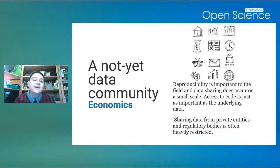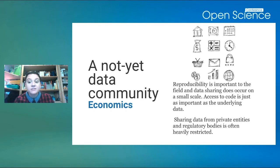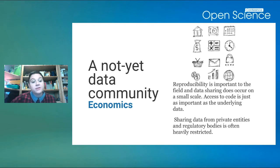Not every form of scholar or discipline can map nicely onto a data community. There are disciplines and sub-disciplines where it's quite challenging to share data — one example is economics. Reproducibility is really important to that field, but it's very challenging because a lot of the data comes from private entities and regulatory bodies. We have to be mindful that there are reasons why data sharing is quite challenging to encourage in certain disciplines.